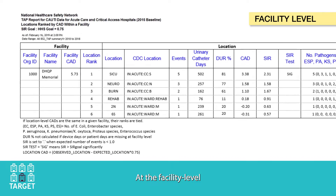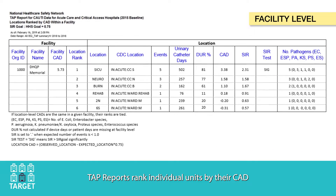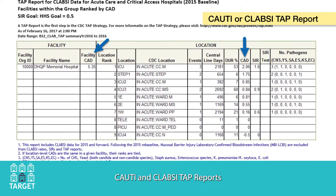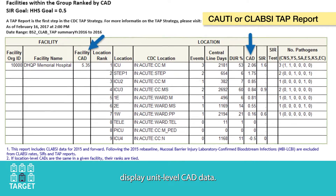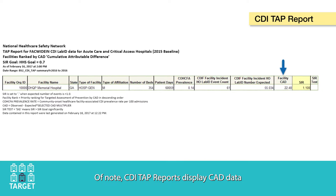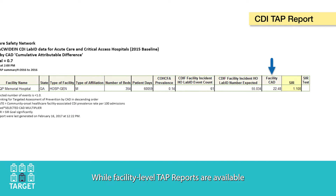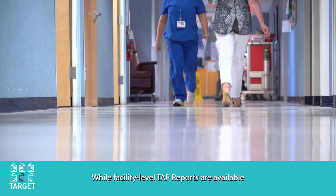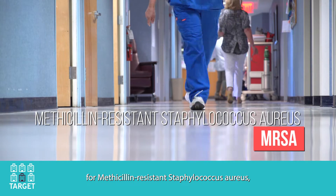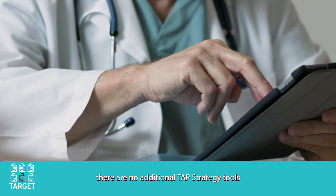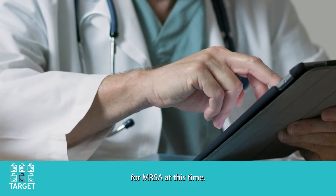At the facility level, TAP reports rank individual units by their CAD, allowing facilities to identify and target specific units with the greatest opportunity for improvement. CAUTI and CLABSI TAP reports display unit-level CAD data. Of note, CDI TAP reports display CAD data only at the facility level. While facility-level TAP reports are available for MRSA, there are no additional TAP strategy tools for MRSA at this time.